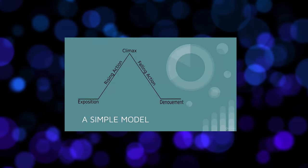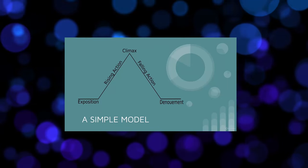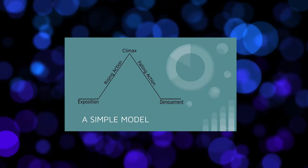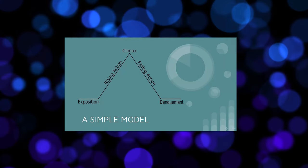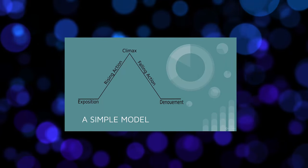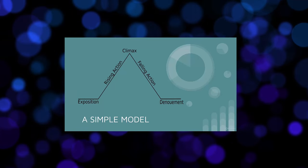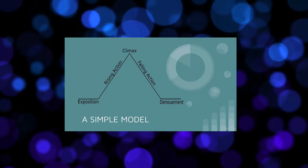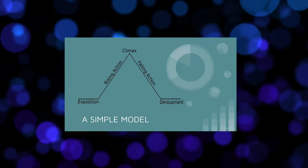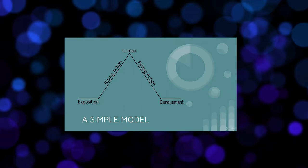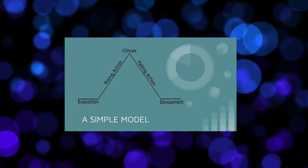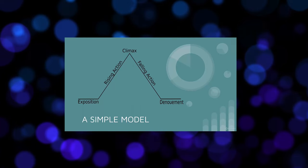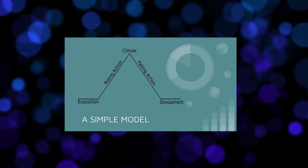I'm going to start with a really simple model of structure: the basic three act structure. Put really simply, all this means is that stories have a beginning, middle, and an end — but we can break this down a little bit more. The beginning is the exposition — this is the world as it starts out. At some point we get an inciting incident, which kicks the action off, and this leads us into our rising action. This rising action gets more and more tense until we get to a climax, and after the climax we get what we call falling action. At the end we have a denouement, which is the resolution of the story.